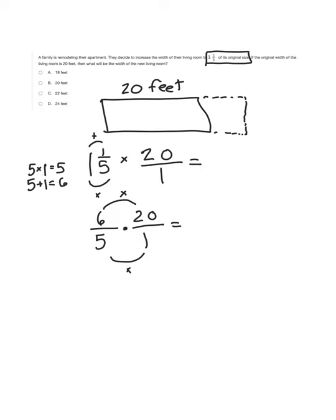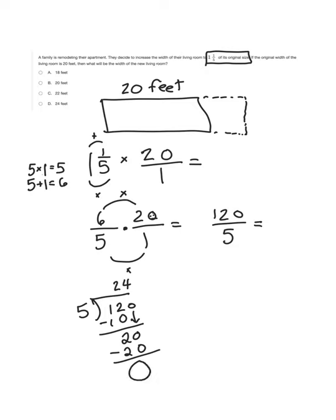Six times 20. I know that six times two is 12 and then I can just add a zero. Six times 20 is 120 and five times one is five. Now I need to simplify. How many times does five go into 120? Five goes into 12 two times. Two times five is 10. Subtract, 12 minus 10 is two. Bring down the zero. How many times does five go into 20? Four times. Four times five is 20 so I have no remainder. I always love the problems with no remainder. 120 divided by five equals 24. So that means the new living room is going to be 24 feet wide.